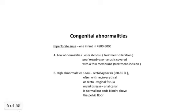Congenital abnormalities include imperforate anus, with an incidence of 1 in 4,500 to 5,000 births. There are two types. Low abnormalities include anal stenosis, which is a reduction in the diameter of the anus — treated by dilatation — and anal membrane, where the anus is covered by a thin membrane, treated by simple incision.